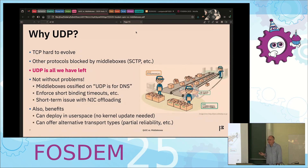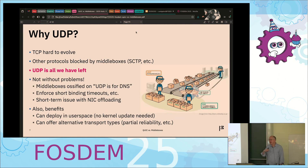Why UDP? The short answer is UDP is all that's left. Middleboxes typically only pass TCP and UDP. We had dreams in the IETF of doing SCTP or DCCP — that's why the IP protocol has a type field for what comes next — but in reality, everything that isn't UDP or TCP gets dropped. We couldn't do TCP because of ossification, so UDP is what's left.